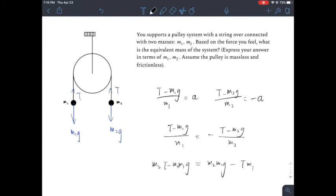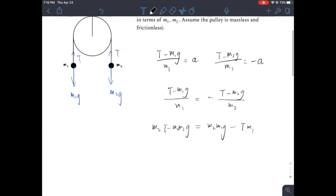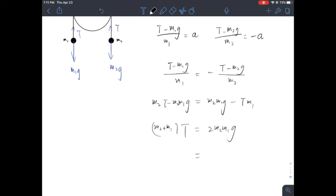So let's cross multiply both sides and then figure out how to deal with the minus sign. We switch the minus. Then we will have m2 plus m1 times T equal to 2 m2 m1 times g. Then T will be equal to 2 times m1 m2 g divided by m2 plus m1. So that's our tension equation.